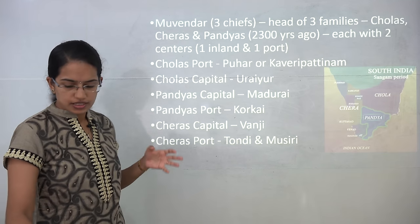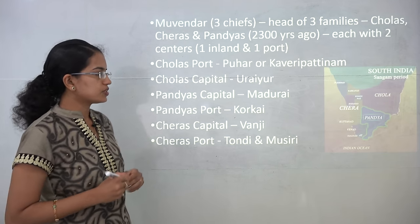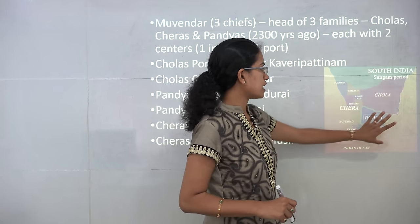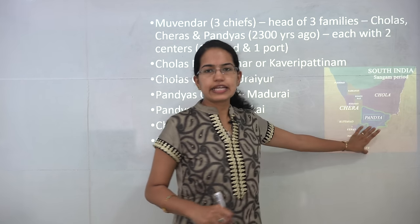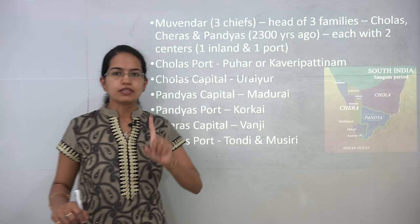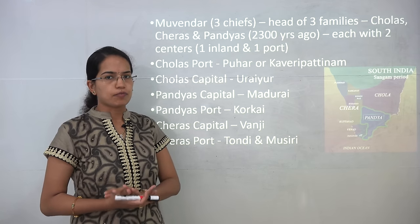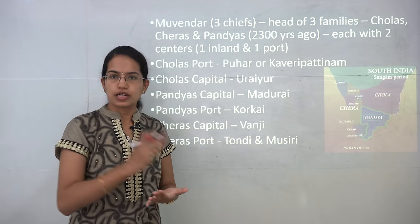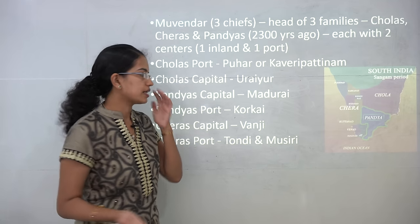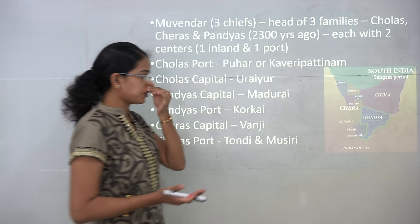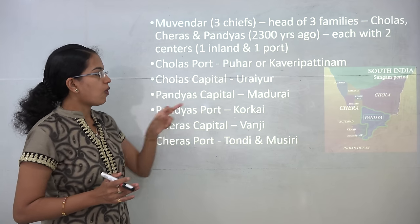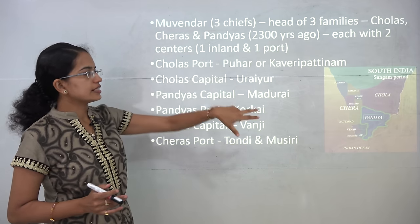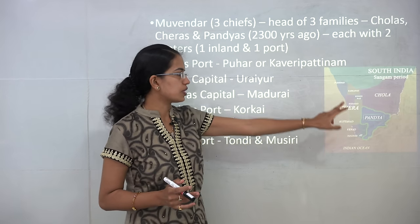The next period is the Sangam period. During the Sangam period there were three primary kingdoms: the Cholas, Cheras and Pandyas. All three kingdoms had one capital city and one port city, which was predominantly important for export and import. These three kingdoms had three chiefs known as Muvendars, who were the heads of the Chera, Chola and Pandya families.